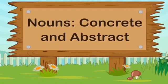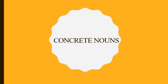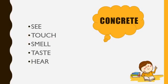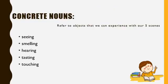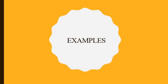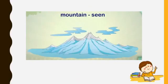Let's discuss concrete and abstract nouns. What are concrete nouns? Anything that you can see, touch, smell, taste, or hear is concrete. Concrete nouns refer to objects that we can experience with our five senses — by seeing, smelling, hearing, tasting, and touching. For example, a mountain can be seen.